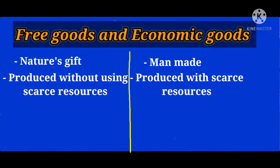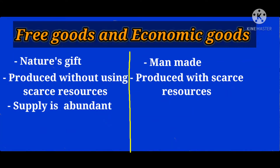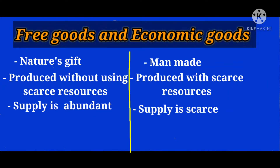Consuming a free good does not reduce consumption for others, because it is not scarce in nature — its supply is abundant and it is plentiful. But consumption of an economic good reduces consumption for others, because economic goods are scarce in nature and their supply is always less than demand.